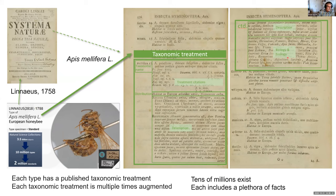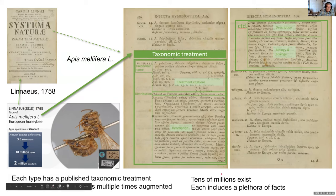Each species has at least one taxonomic treatment — many have far more. Each subsequent treatment augments previous ones or synonymizes them. There are tens of millions of them in existence, and each includes a wealth of facts.